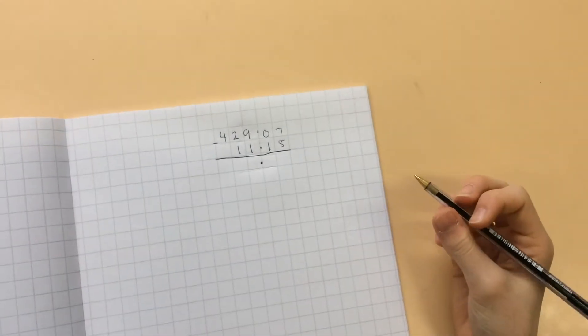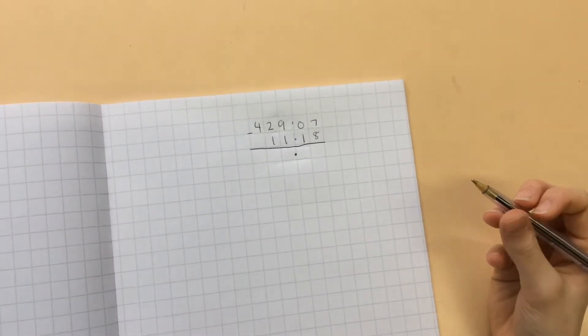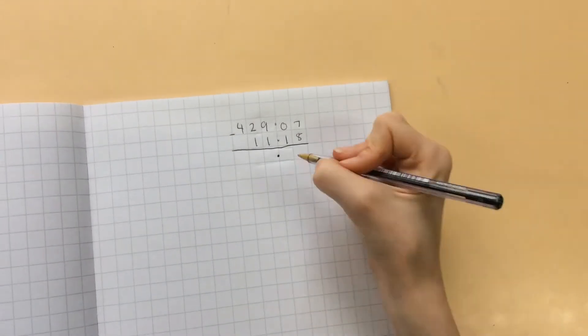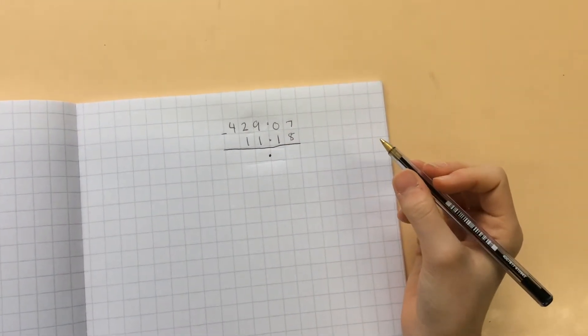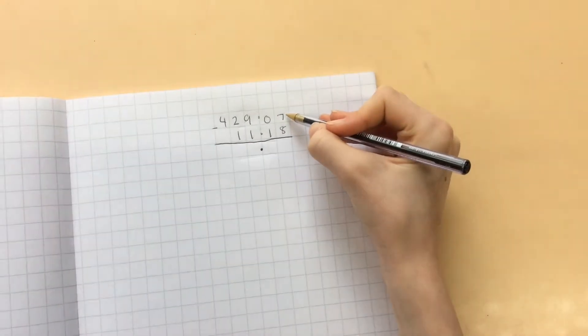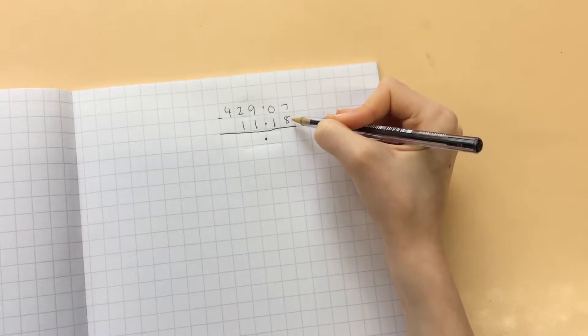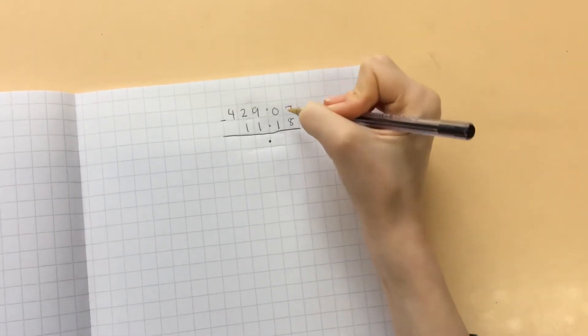Once you have learnt this method, you can apply it to any calculation. For example, this one with decimals. First, you put your decimal point in to make sure your place values are aligned. Then you do 7 hundredths take away 8 hundredths. But it becomes a negative number, so you have to look to the next column.